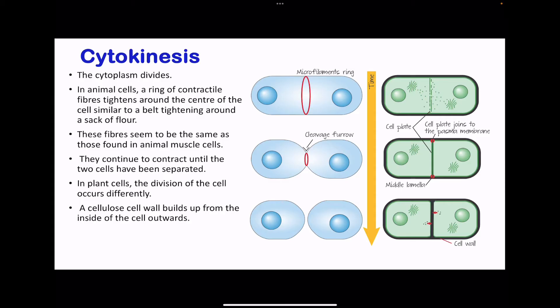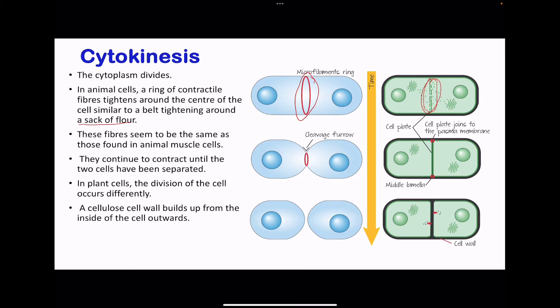The final stage of the cell cycle is cytokinesis, where the cytoplasm actually divides to produce two daughter cells. In animal cells, a ring of contractile fiber tightens around the center — like a belt tightening around a circle — and continues to contract until the two cells are separated. However, in plant cells, the cell walls form from remains of organelles that are filled with cell wall material to separate the two cells.